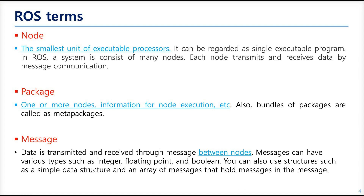Let's start from ROS term definitions. There are many keywords, but these three are the most important elements in ROS. The first is a node. The node is the smallest unit of executable processes — you can think of it as an executable function. Nodes send or receive data from each other. Consider a simple object detection program: a camera takes video and sends it somewhere to detect objects in that video.